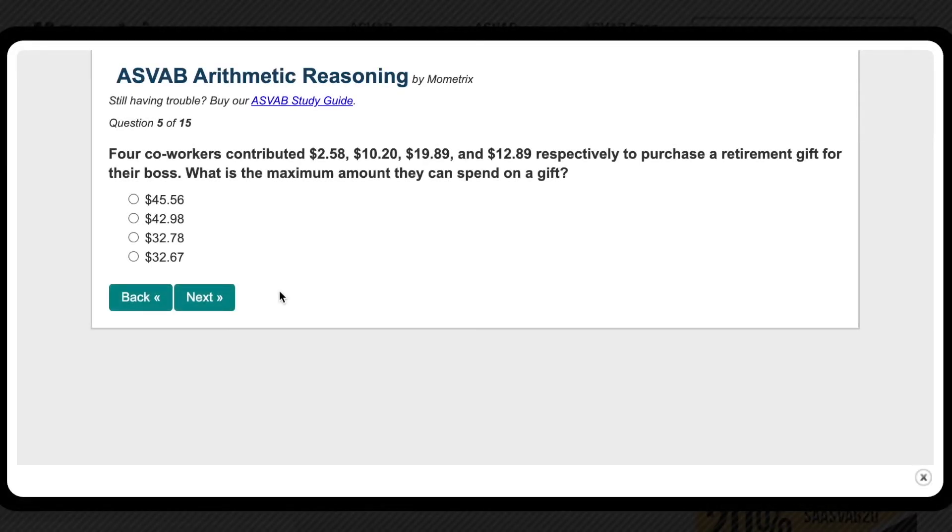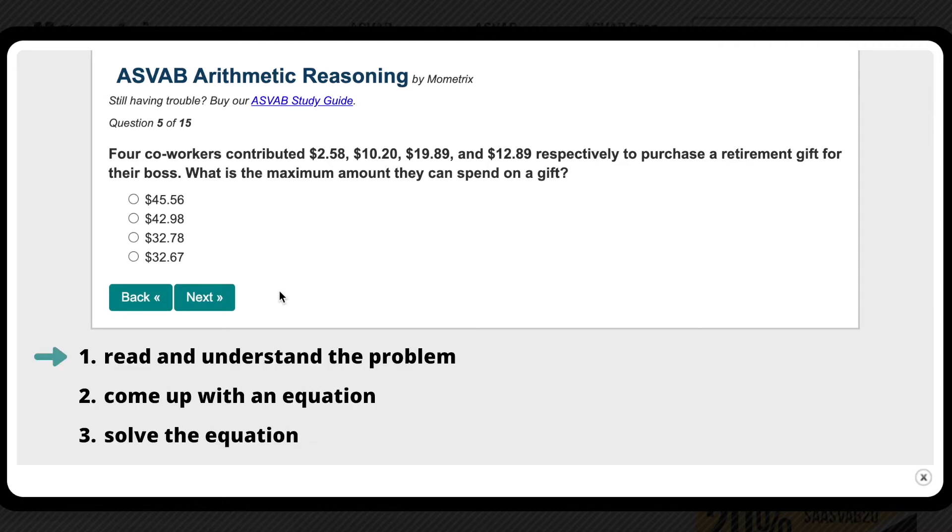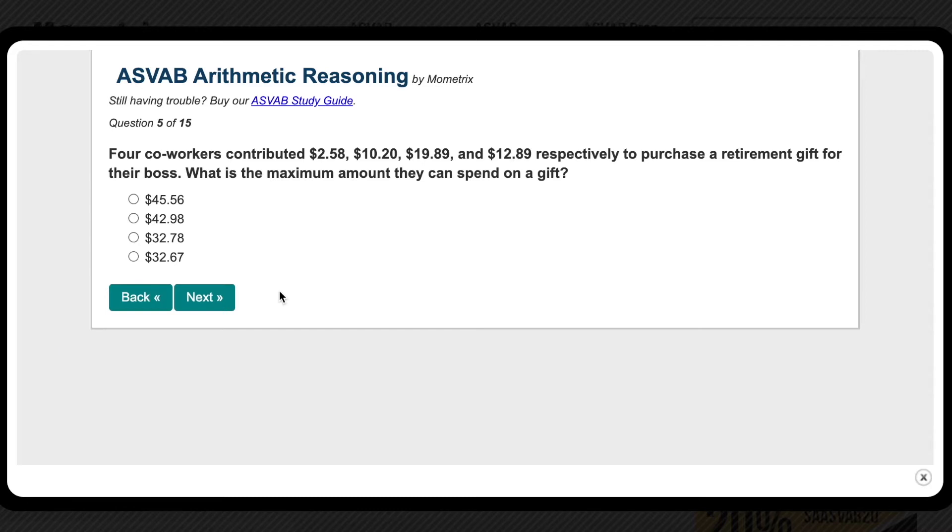All right, here is our first problem. Let's start off easy. When we encounter word problems, the first thing we want to do is obviously read the problem, then more importantly, identify what we're supposed to solve for. So we have four co-workers who contributed $2, $10, $19, and $12 respectively to purchase a retirement gift for their boss. What is the maximum amount they can spend on a gift? Most of the time in word problems, what you're trying to solve for is in the last sentence. It's asking us for the maximum amount of money they can spend.